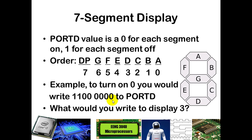What would we do if we wanted to display 3? Let's check: the decimal point should be off, so that's a 1. G is part of 3, so that's a 0. F is not part of 3, so that's a 1. E is not part of 3, so that's a 1. Segments A, B, C, and D are all on for a 3, so those are all 0s. That gives us the binary value 1,0,1,1,0,0,0,0. Converting to hexadecimal by splitting into nibbles, that would be 0xB0.